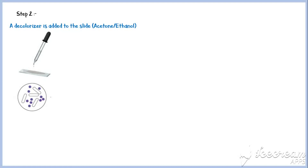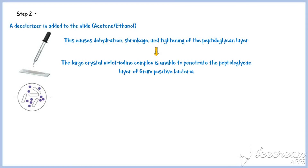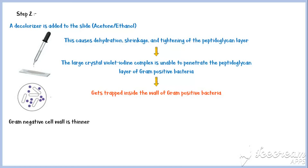In the second step, a decolorizer such as acetone or ethanol is added to the slide. This causes dehydration, shrinkage, and tightening of the peptidoglycan layer. As a result, the large crystal violet-iodine complex is unable to penetrate the peptidoglycan layer of gram-positive bacteria and gets trapped inside their cell wall. However, as the peptidoglycan layer of gram-negative cells is thinner, the crystal violet-iodine complex is washed out during decolorization. In the magnified slide, you can see the stained gram-positive cells in purple and decolorized gram-negative cells in white.